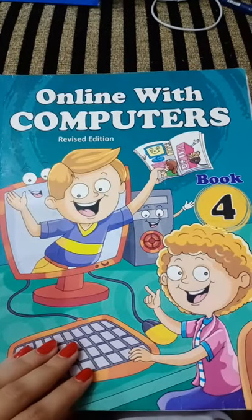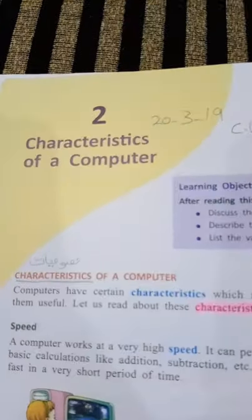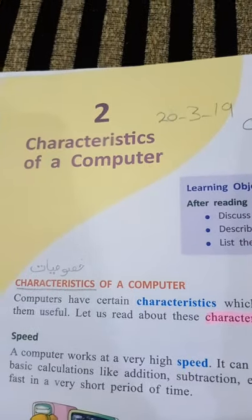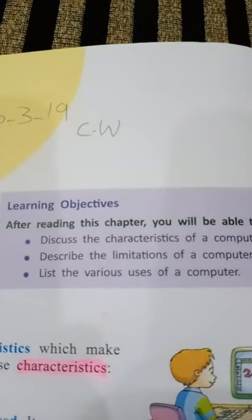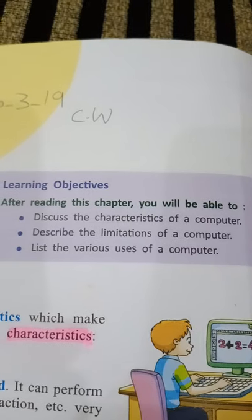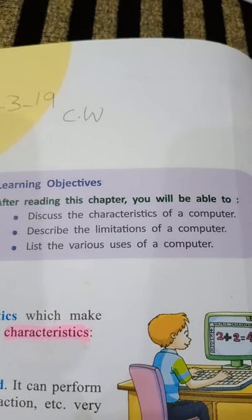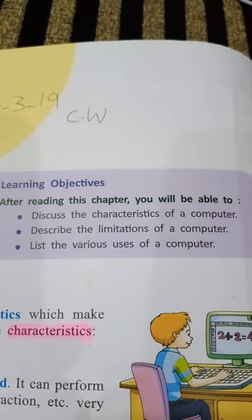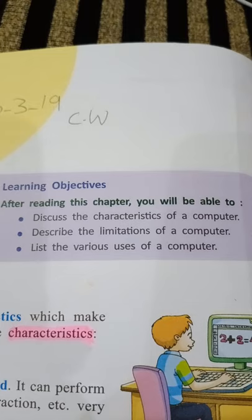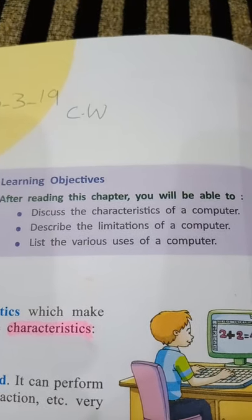Welcome. Today we are going to start the second chapter of grade 4. Chapter number 2 is Characteristics of a Computer. The learning objectives are: after reading this chapter you will be able to discuss the characteristics of a computer, describe the limitations of a computer, and list the various uses of a computer. These are three learning objectives we will be able to explain after reading this chapter.